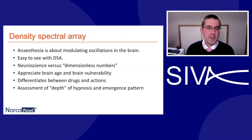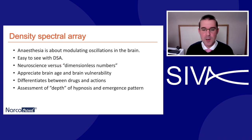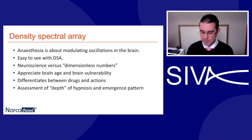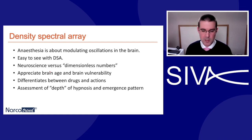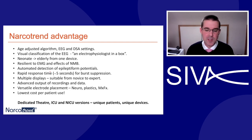So, density spectral array. Anaesthesia is about modulating oscillations in the brain — this is easy to see with DSA. It's neuroscience versus dimensionless numbers. We can appreciate brain age and brain vulnerability, differentiate between our different drugs and their mode of action, and assess the depth of hypnosis and our emergence pattern. And this really isn't the future — this is the now, available on all of the main brands of processed EEG monitor. It's worth comparing the feature sets of the various monitors, as some have more limited implementation of DSA than others. For instance, it's useful to be able to flag events and adjust the EEG and DSA scales for paediatric and aging brains.